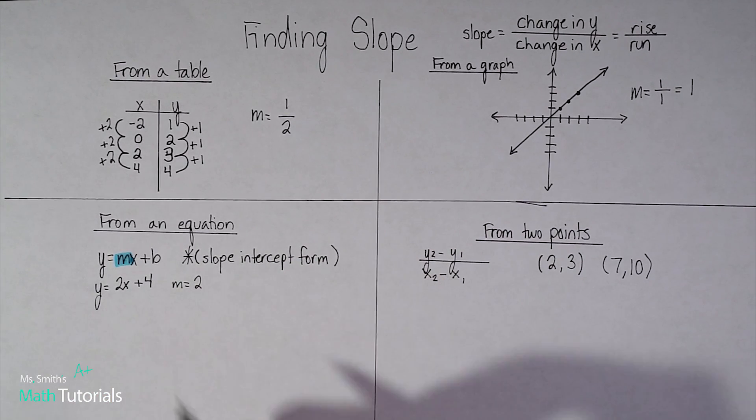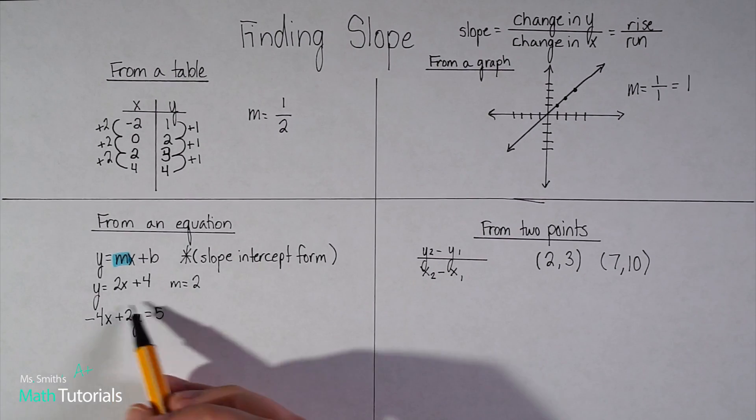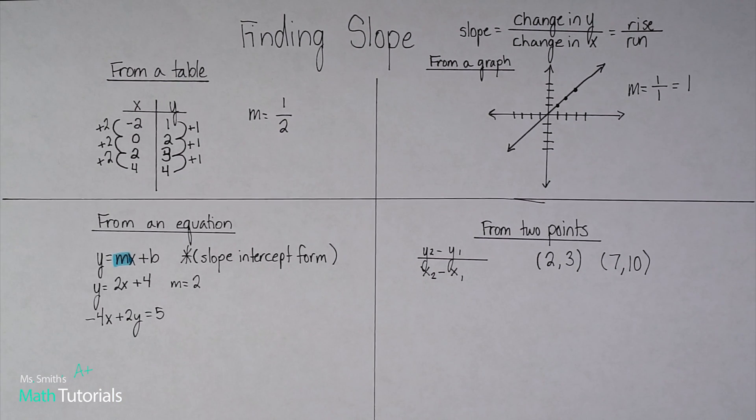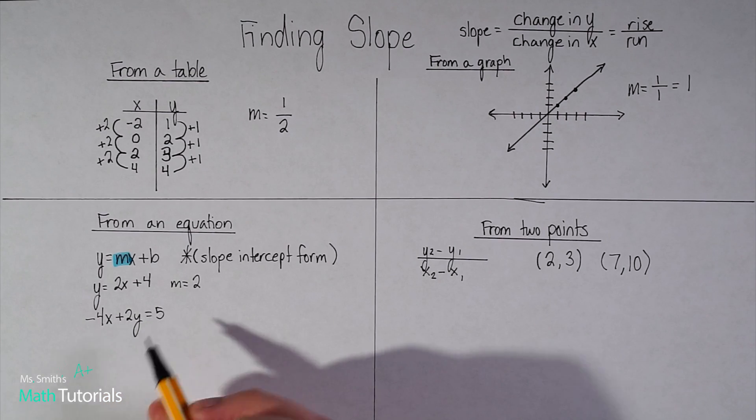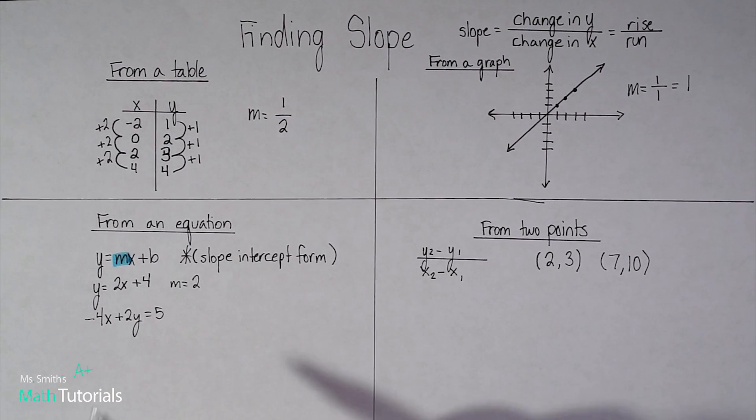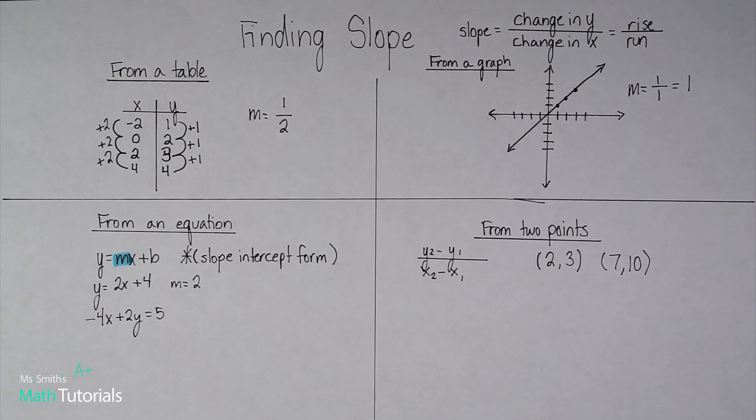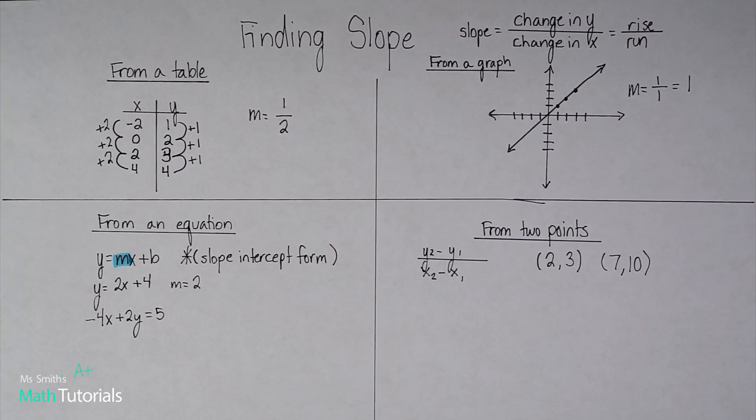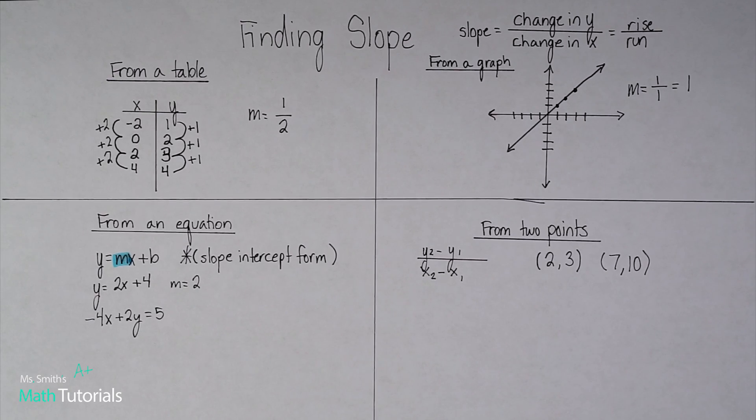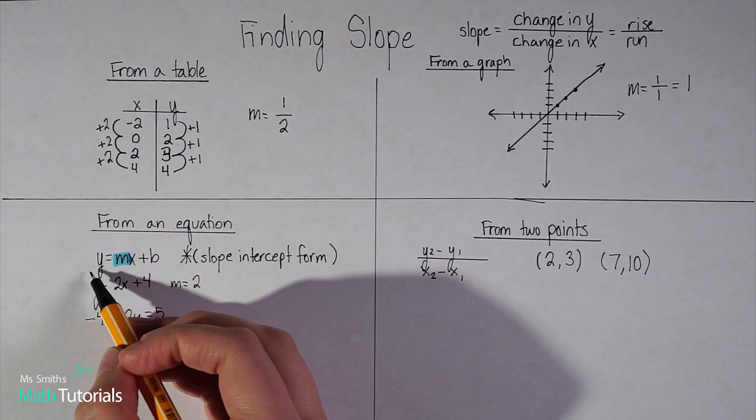Now they're not always going to give it to you in that nice, pretty form. So they could give you something like this and then say, tell me slope. Well, there's no way just looking at this, you know, when we're math one students just starting out, I can't look at this and tell you what the slope is. It's not in the right form. I've got to get it in slope intercept form to be able to tell you.